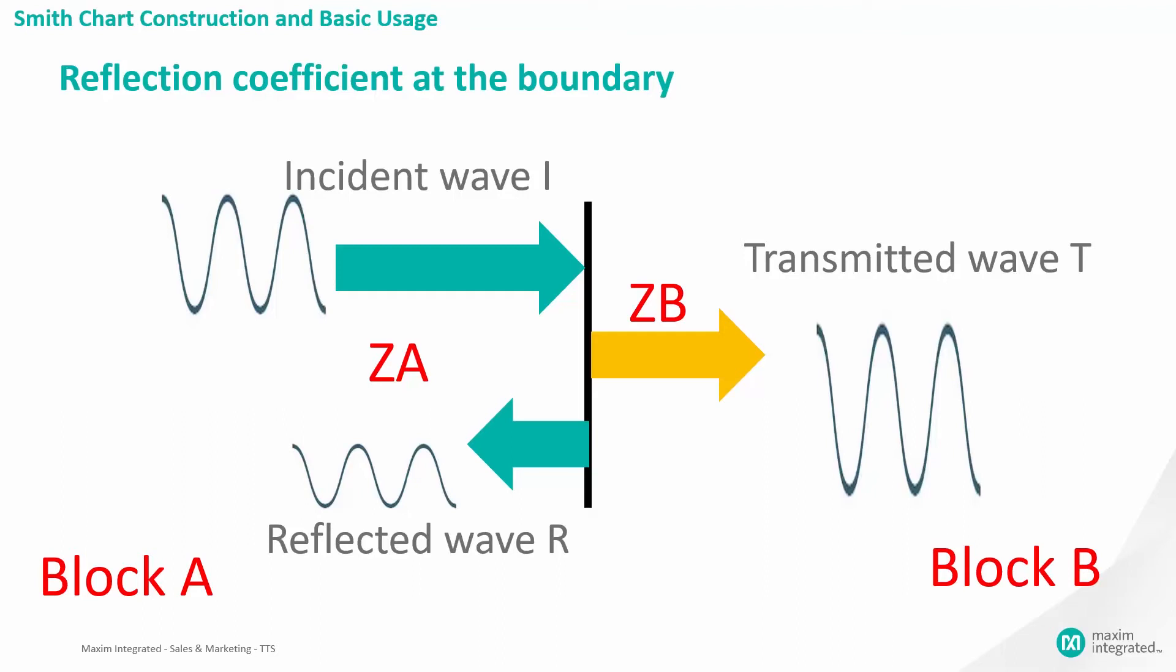At the interface, we observe, one, there is a continuity of wave amplitudes, so I plus R must equal T. And energy must be conserved, so I squared over ZA must equal R squared over ZA plus T squared over ZB.